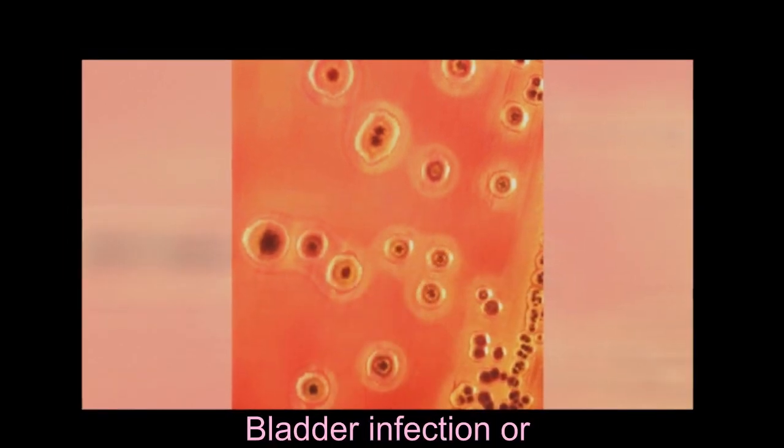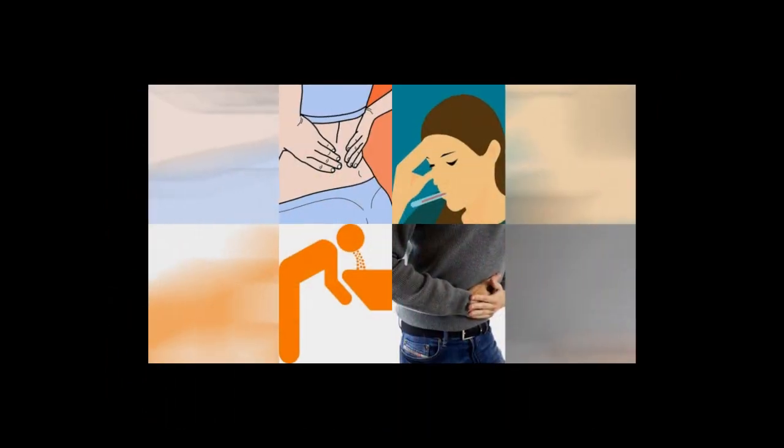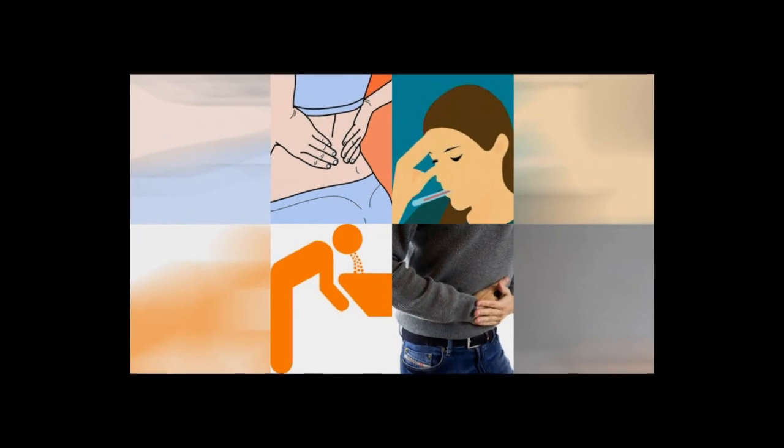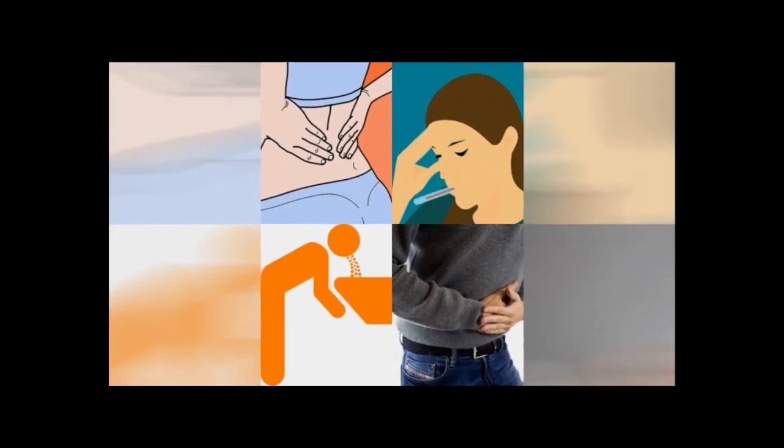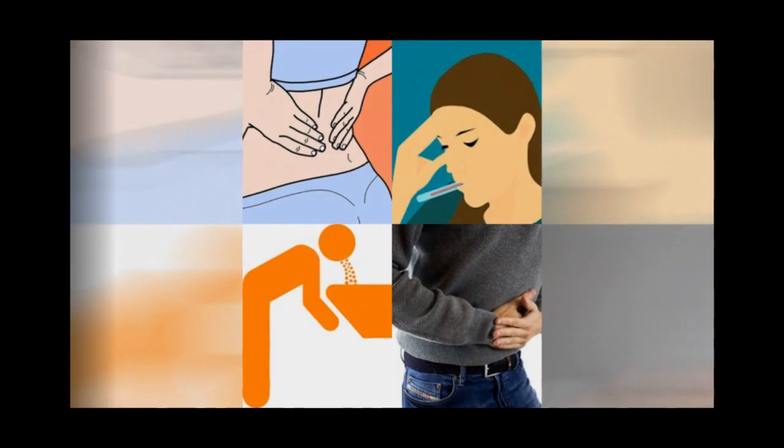Having a bladder infection or bacterial urinary tract infection may also be associated with foamy urine. When bacteria enter the bladder and multiply, a patient may have symptoms like frequent urge to urinate, burning with urination, or foamy appearance of urine. At times, you may notice a bloody look in urine. You may want to see a doctor if symptoms of urinary tract infection are accompanied by nausea, abdominal pain, back pain, vomiting, or fever.